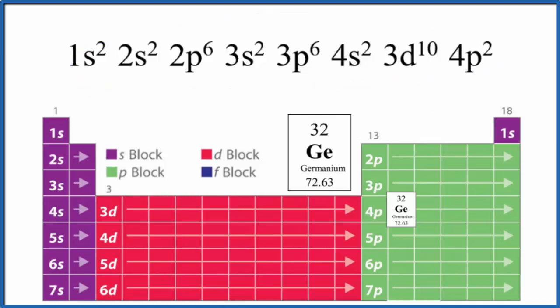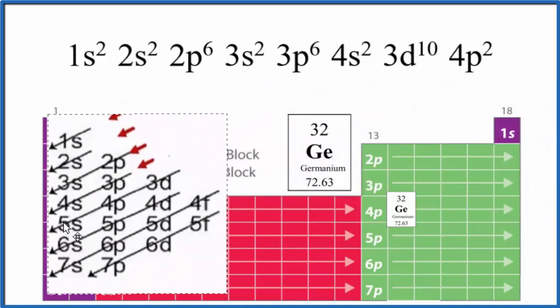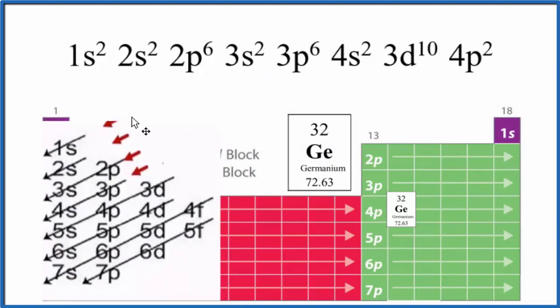There are two ways to write the electron configuration. The first way is you could use the diagonal rule. So you have a chart like this, you follow the arrows, you complete the configuration. There's a link in the description if you need help with that.